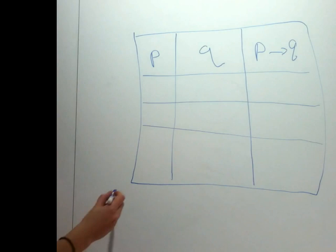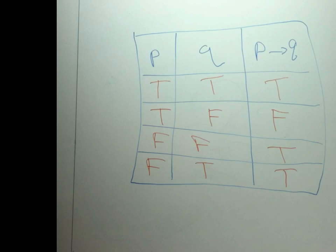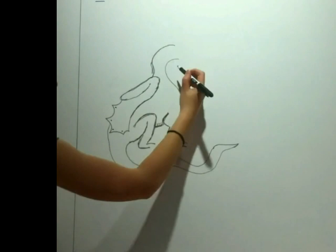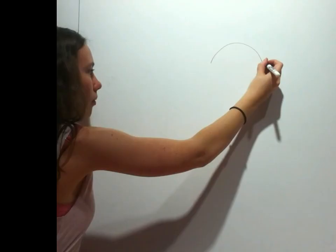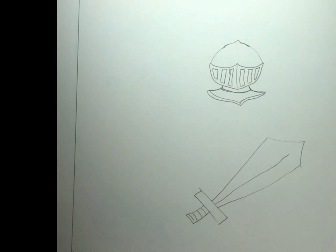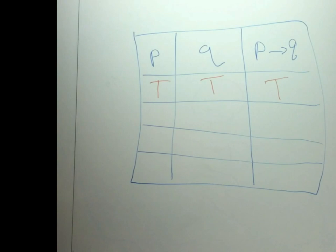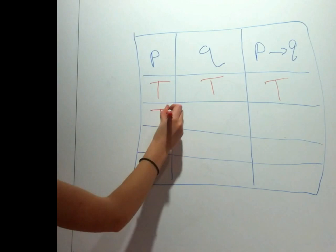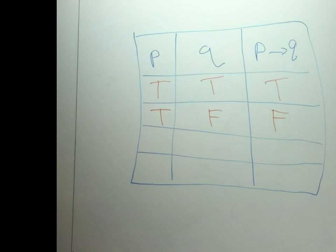If we look at the truth table for P implies Q, in the truth table T represents TRUE and F represents FALSE. If you slay a dragon, then you are a hero — this is true. If you slay a dragon and then you are not a hero, this statement is FALSE. This is because we said at the start that if you slay a dragon, then you are a hero. But in this case, you're not a hero after slaying a dragon, which doesn't satisfy this statement. You should be a hero if you slay a dragon.